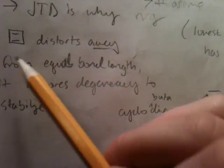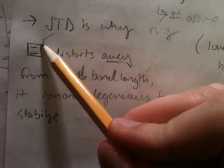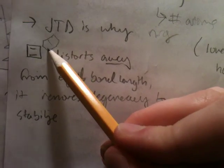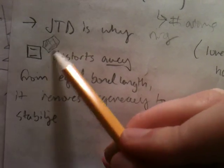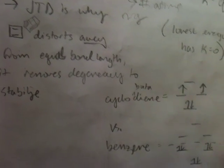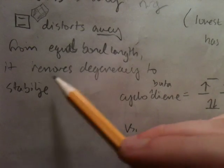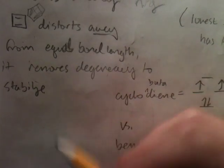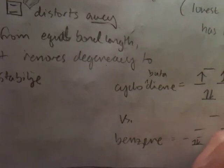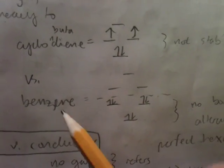Cyclobutadiene wants to distort. Even without talking about ring strain, you can see that it just doesn't look as stable as benzene. Cyclobutadiene distorts away from equal bond lengths in order to remove the degeneracy and stabilize itself.